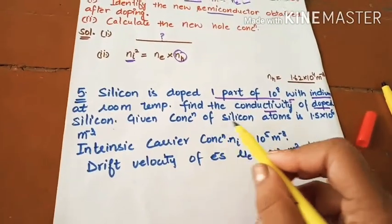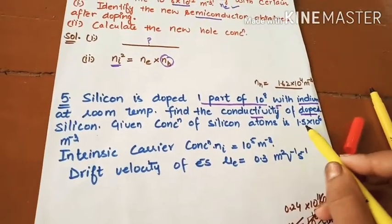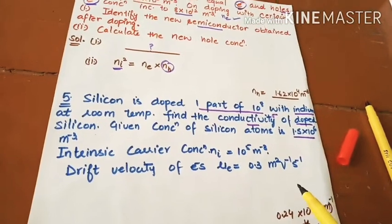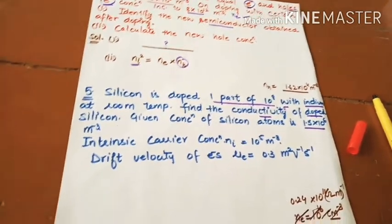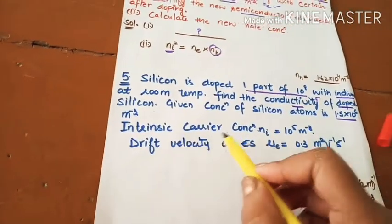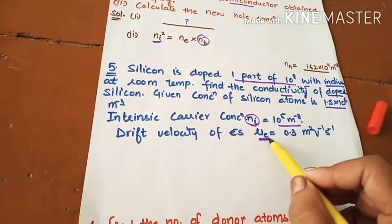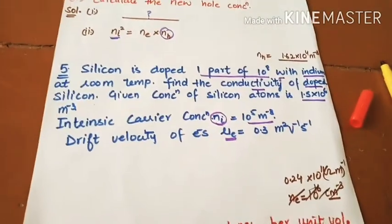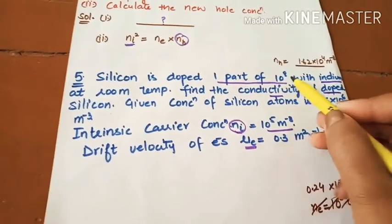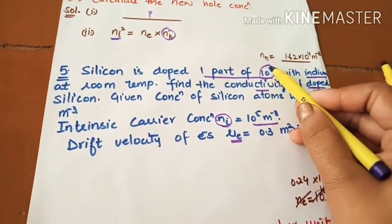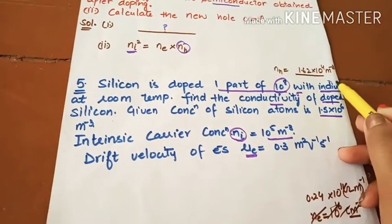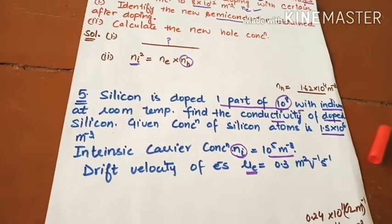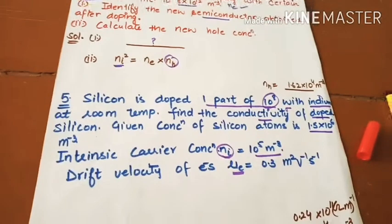Given: concentration of silicon atom, intrinsic carrier concentration Ni, drift velocity of electrons mu e. First, convert one part of 10 raised power 8 indium. Indium adds acceptor atoms. Then divide the silicon concentration by 10 raised power 8 to get the doping concentration.